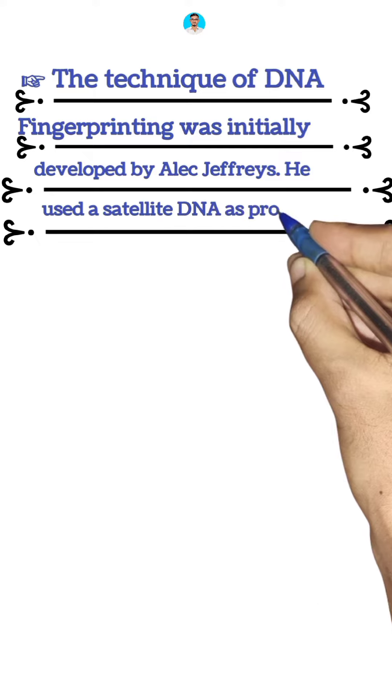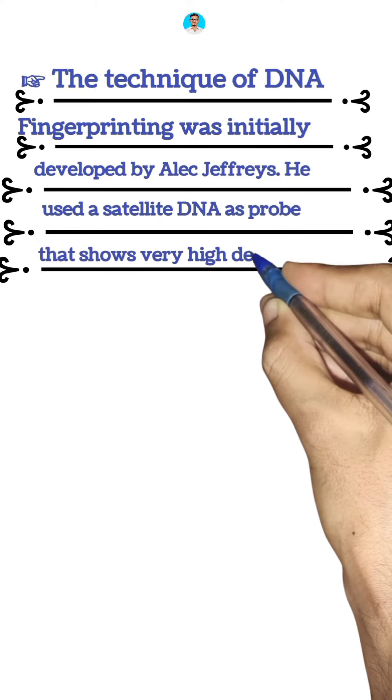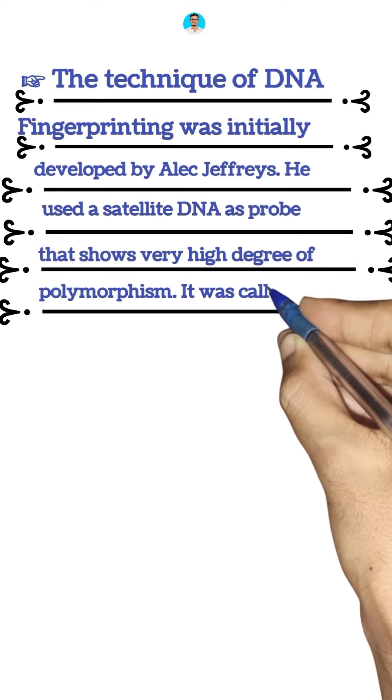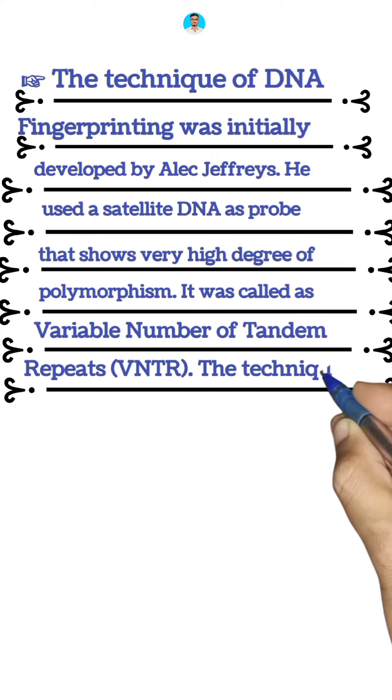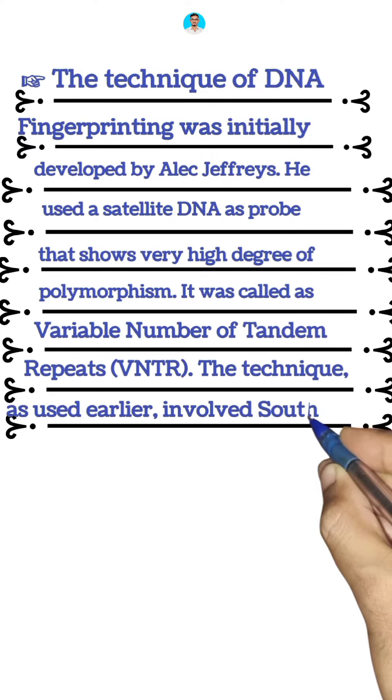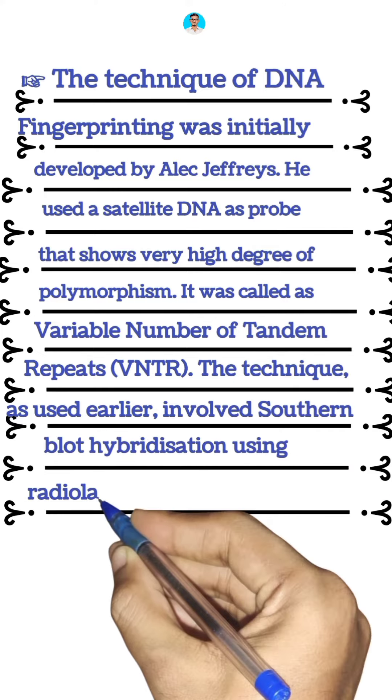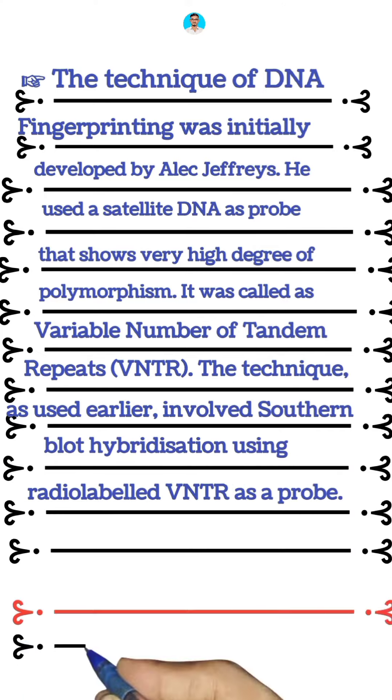He used a satellite DNA as probe that has a very high degree of polymorphism. It was called variable number of tandem repeats (VNTR). The technique as used earlier involved Southern blot hybridization using radio-labeled VNTR as a probe.